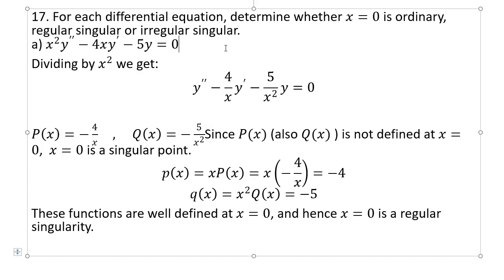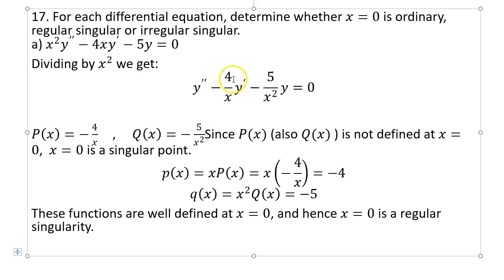To see if you have an ordinary point or a singular point, you divide by the coefficient of y double prime and see what you have. If you get fractions where x in the denominator makes them undefined at x equal to 0, that immediately means it's not an ordinary point — it's singular. Even if just one of them fails, it's singular.